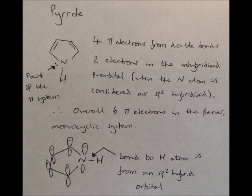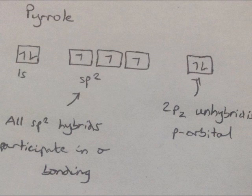The bond from nitrogen to hydrogen is from the sp2 hybrid orbital, therefore leaving the unhybridised p-orbital to be a part of this pi system. The way the pyrrole differs from pyridine is based upon where the lone pair sits. In pyrrole, it sits in the 2pz unhybridised p-orbital, whereas in pyridine, the lone pair occupies one of the sp2 hybrid orbitals.